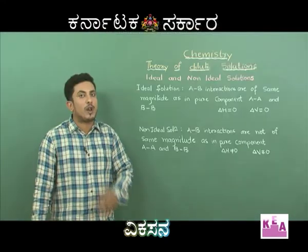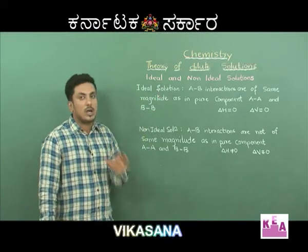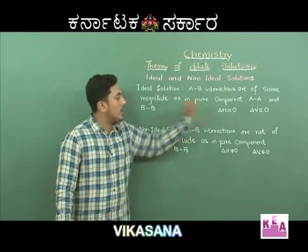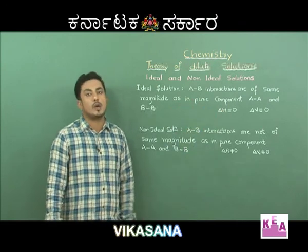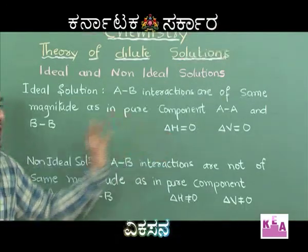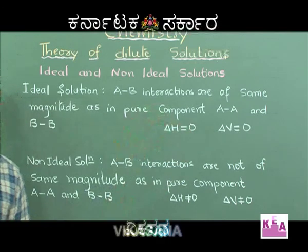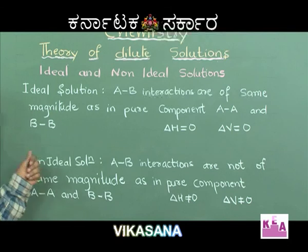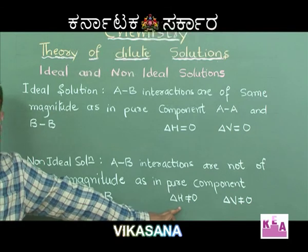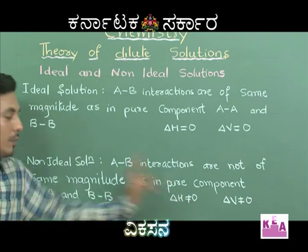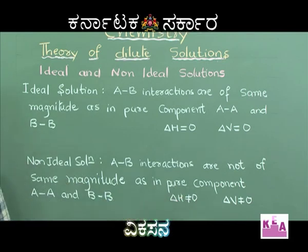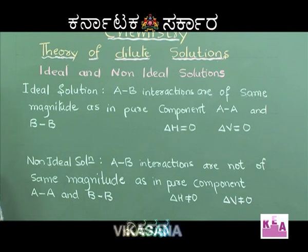For ideal solutions, delta H equals 0 and delta V equals 0 — no heat is absorbed or liberated on mixing the two components, and there is no change in volume. Whereas in non-ideal solutions, delta H is not equal to 0; on mixing, either heat is liberated or absorbed, and there is a change in volume.